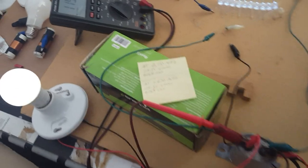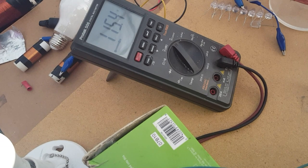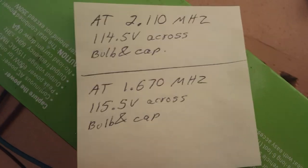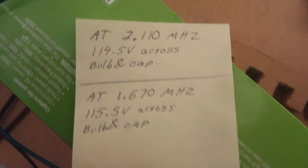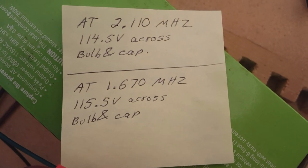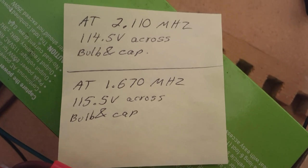Okay, I readjusted the frequency. We're at 115, well 0.4 volts now. Actually I have two resonant frequencies, and you can see at 2.110 megahertz, 114 across the bulb and cap. But at 1.670 is a little better.